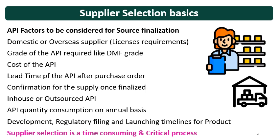Then you will check the grade of the API — whether you require the DMF grade, or the grade matching or in compliance with the Indian Pharmacopeia or the country-specific pharmacopeia. Then you will see the cost of API. The cost of API is the key consideration, because the API is the main constituent or main raw material which costs more than the other raw materials.